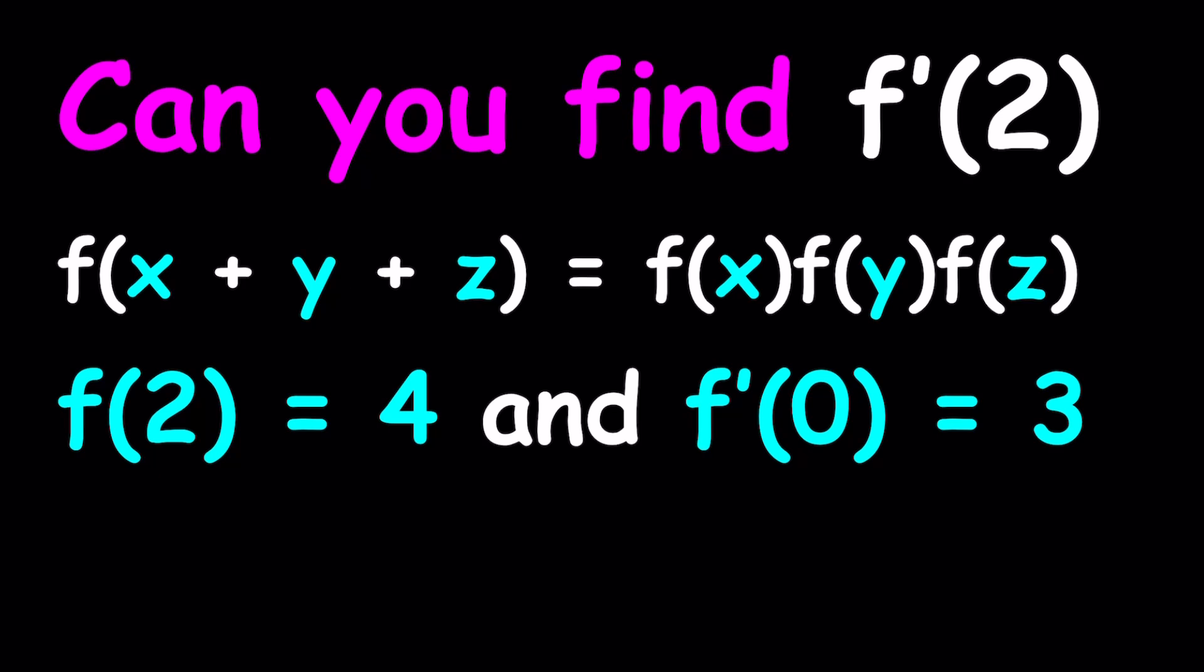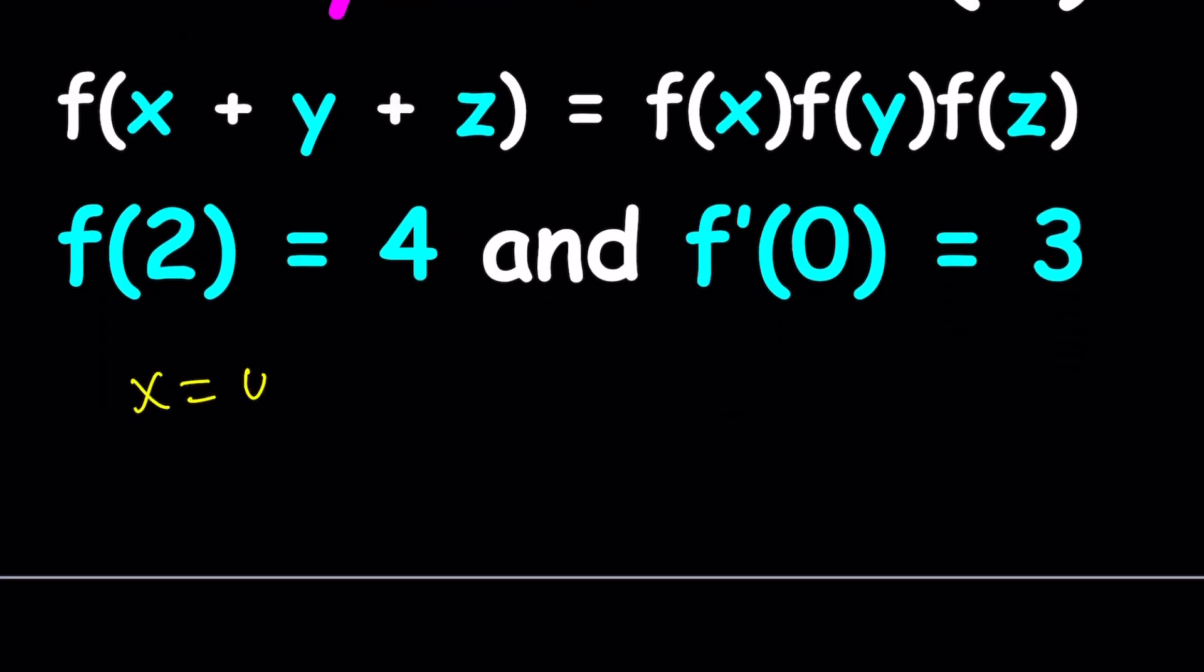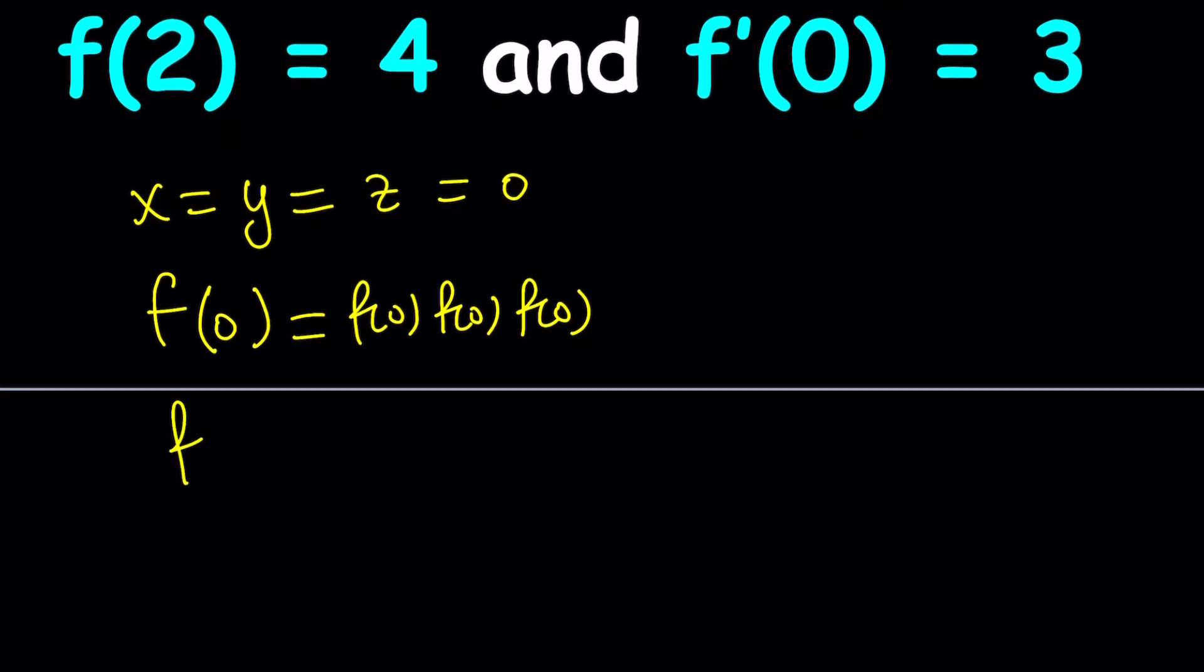So let's see what we can do about it. First of all, I would like to replace x, y, and z with 0. Because that's going to give me f(0) on the left hand side. So I'm going to get f(0) equals f(0) times f(0) times f(0). What does that mean? It just means that f(0) cubed. But let's go ahead and put everything on the same side. And we want to factor out a common factor, which is f(0), 1 minus f(0) squared equals 0.